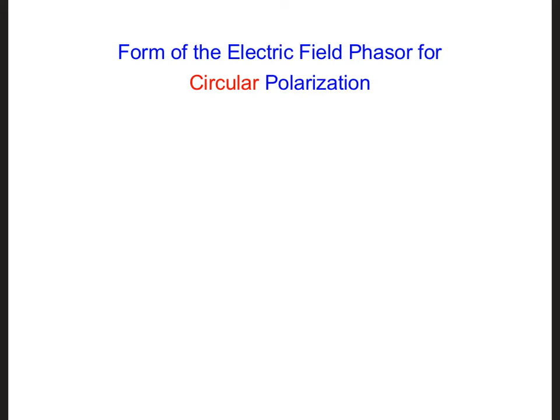The general form of the electric field phasor for a circularly polarized wave propagating in the z direction is E vector phasor. It will have an x hat component and a y hat component.